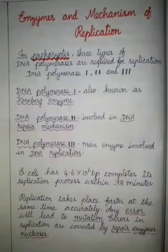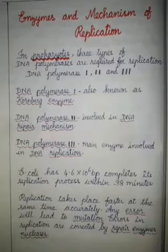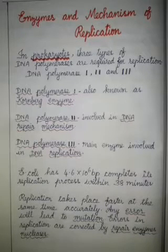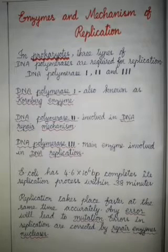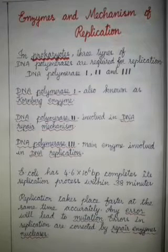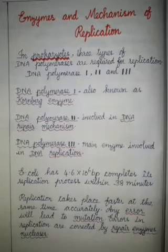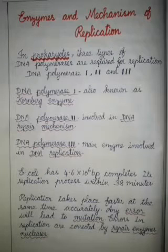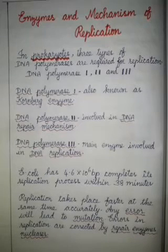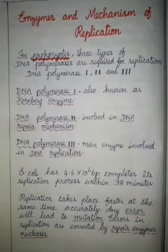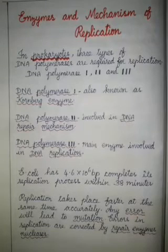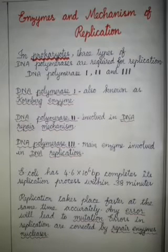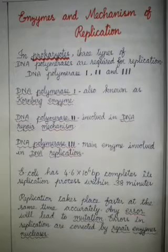In the previous video we studied about the types of DNA replication and the experiment to prove the semi-conservative replication of DNA. In this video we are going to learn about the enzymes and the mechanism of DNA replication. DNA replication is a process by which two DNA strands are synthesized from the DNA molecule — one strand will act as the template and the complementary strand will be produced.